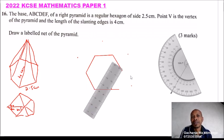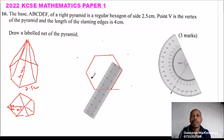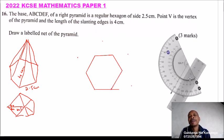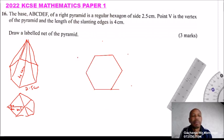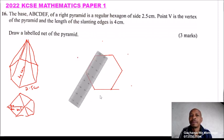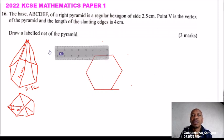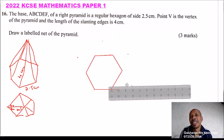That's our hexagon — 1, 2, 3, 4, 5, 6 sides. With that, we can now use a compass to draw the slanting faces — that is, the triangular faces. We measure the slanting line.